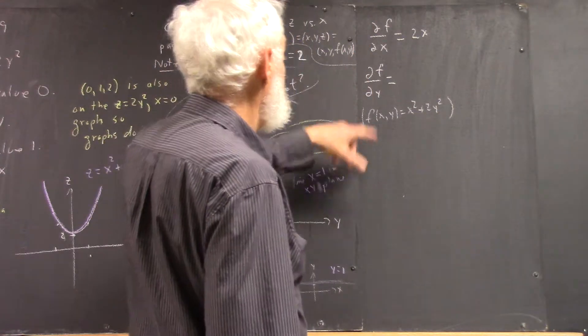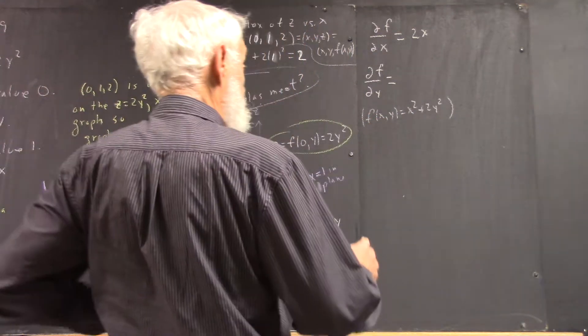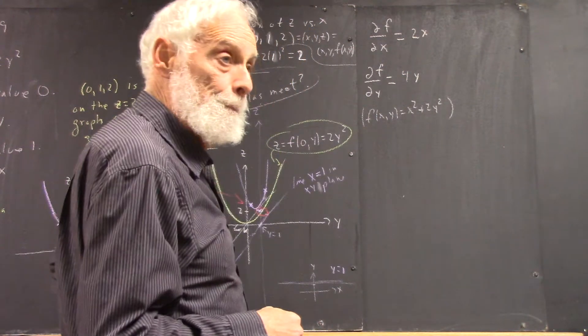And then, partial with respect to Y means we hold X constant for all the reasons we talked about last time. Taking the derivative with respect to Y we get 4Y.